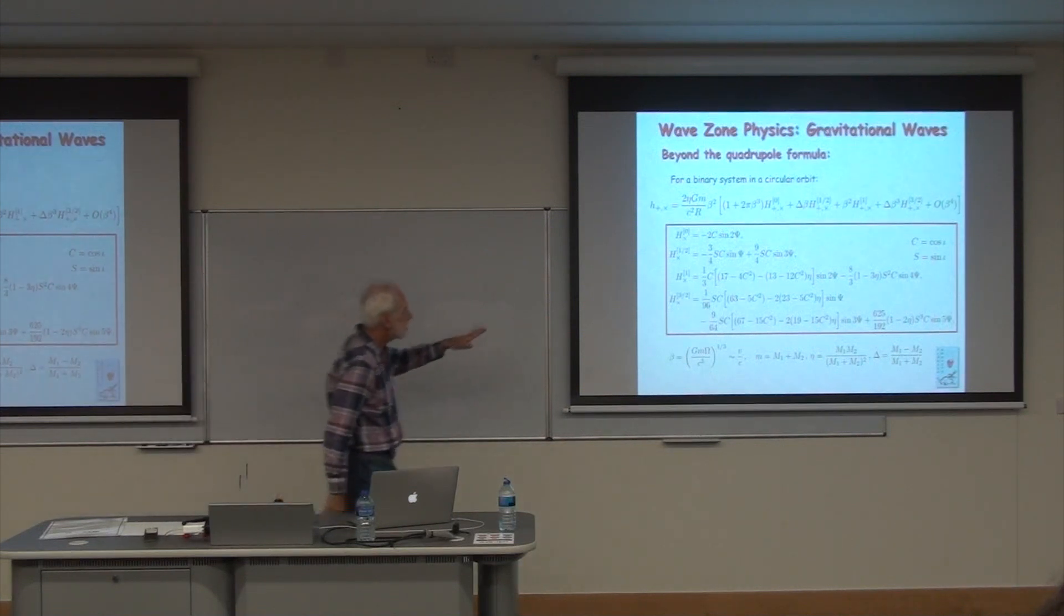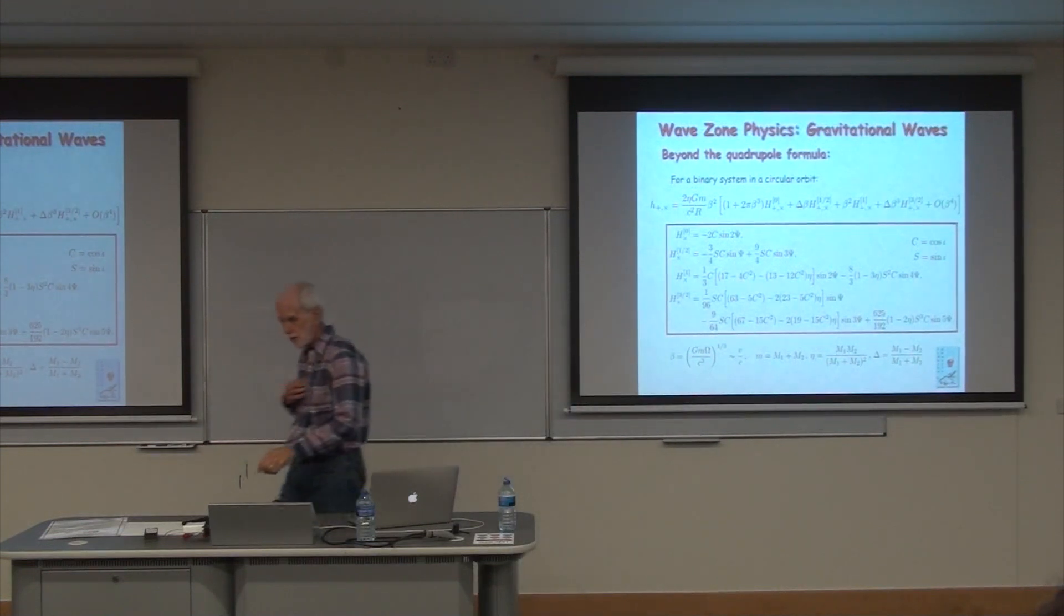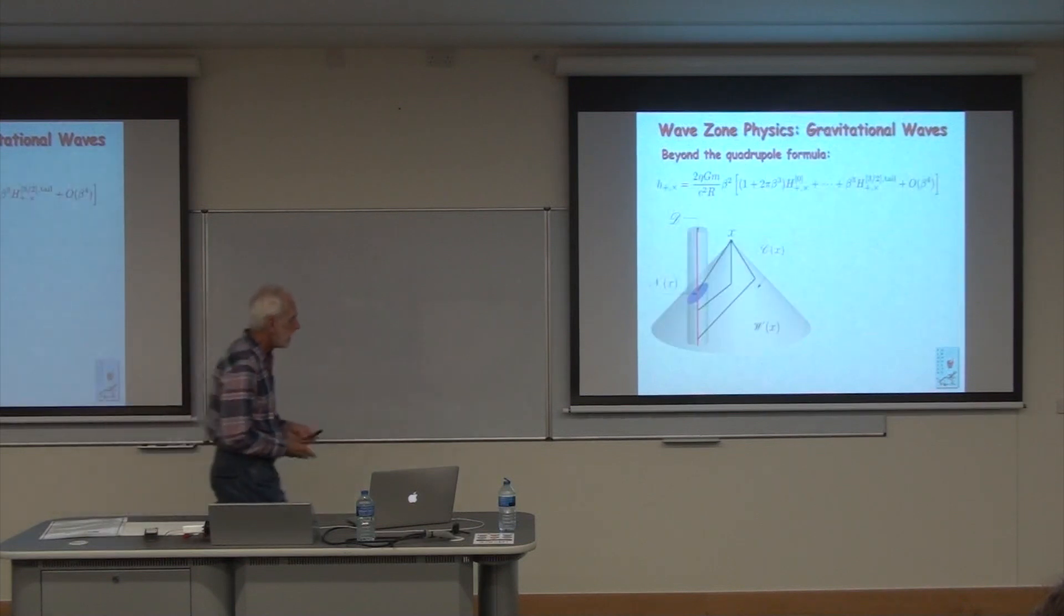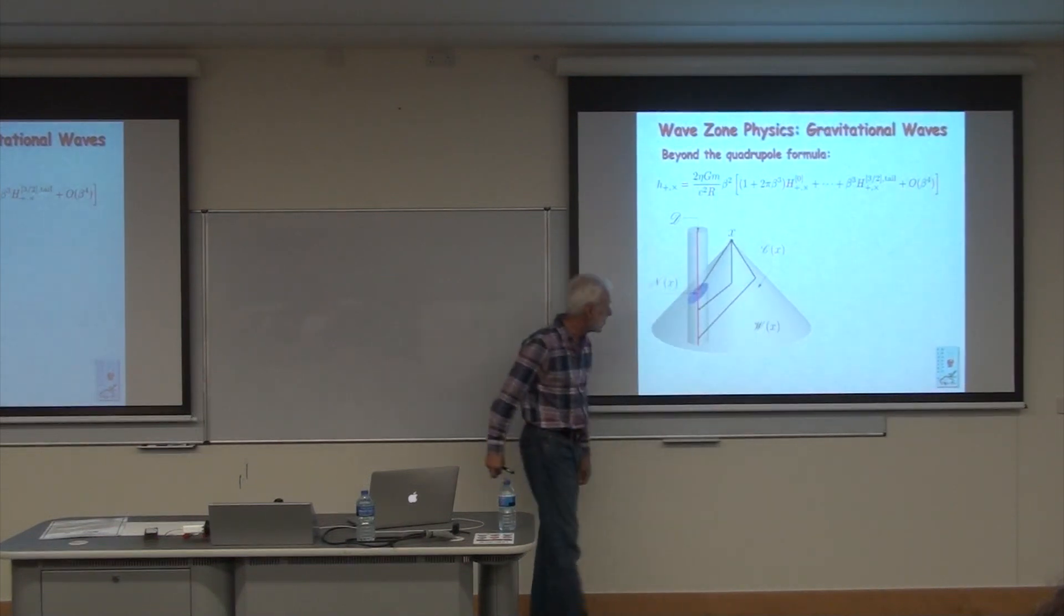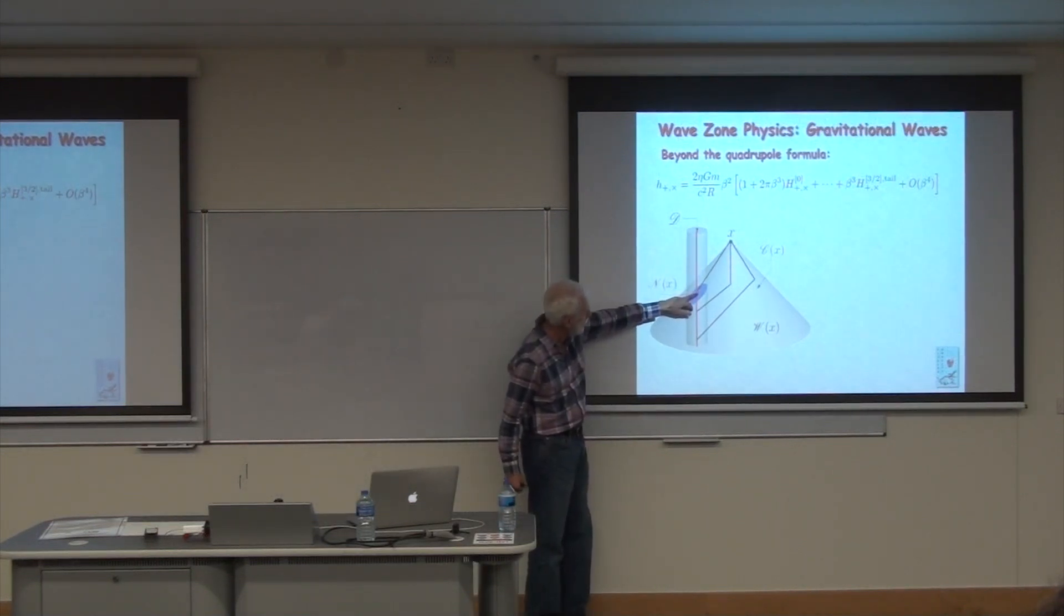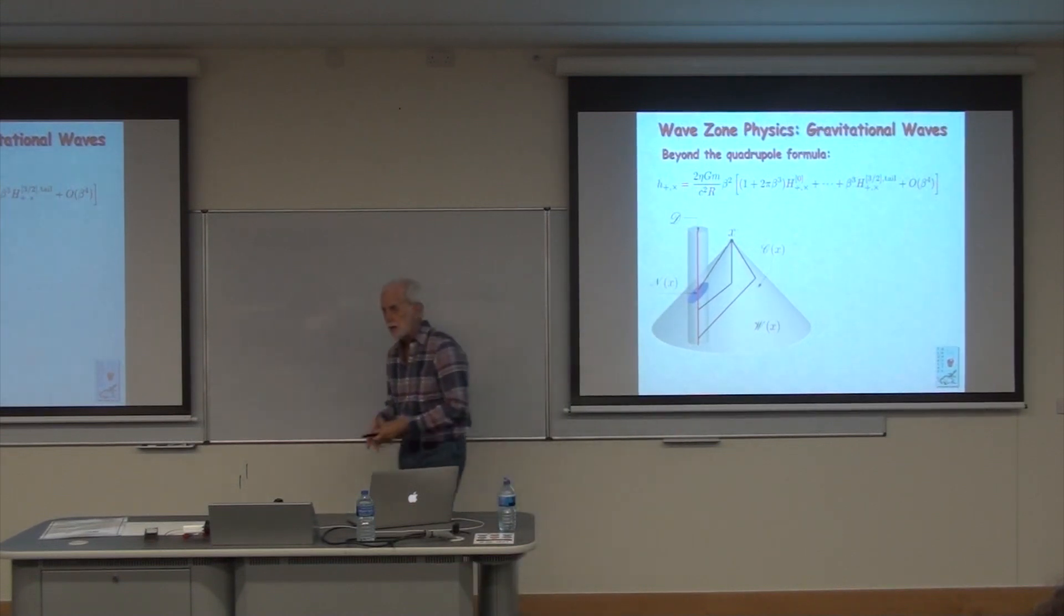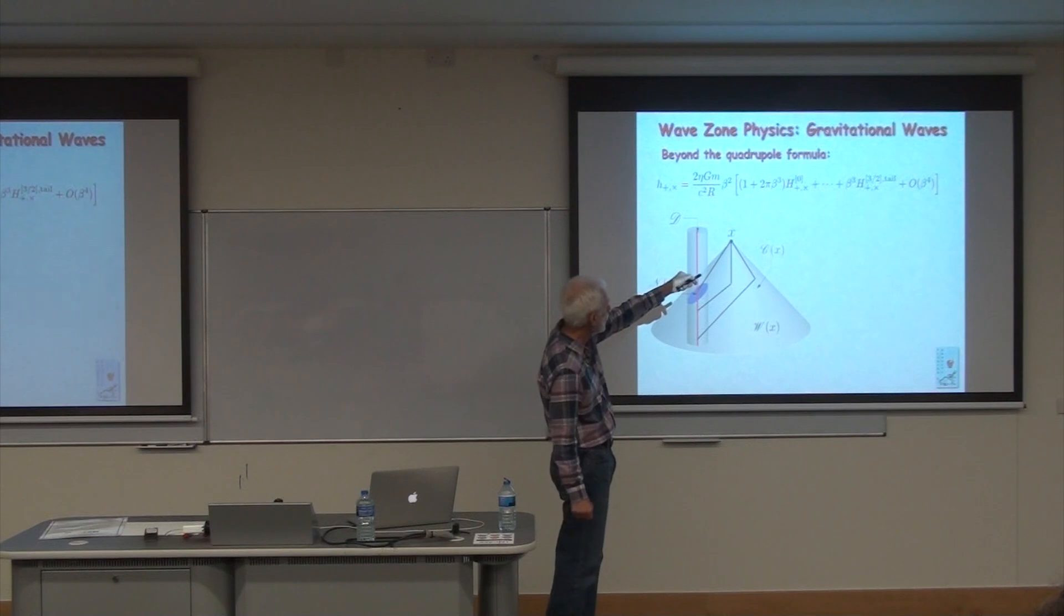Those integrals don't contribute at the lowest order. They're not quite all half to one, but they do make a contribution at three-halves post-Newtonian order. They're called tail terms. Essentially, they are the result of the fact that the gravitational waves scatter off the curved space-time produced by the source itself. That scattering results in behavior that depends on the behavior of the system all the way to the infinite past, starting from the standard retarded time. There's this integral from here all the way to the past. When you calculate it, you realize it only contributes at high order, but it does contribute at three-halves post-Newtonian order, beta cubed over c cubed relative to the leading term.